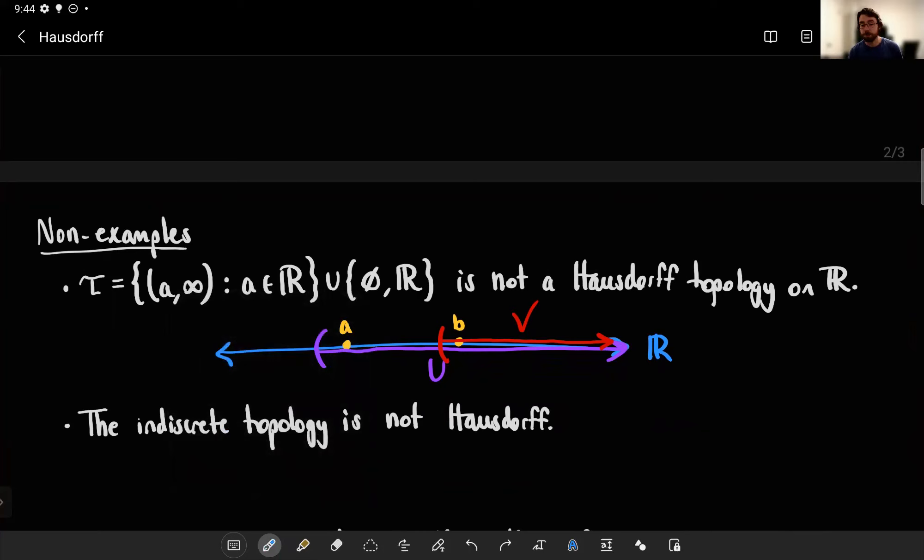Now, since we know the discrete topology is Hausdorff, maybe it's unsurprisingly indiscrete topology is not Hausdorff. Remember, the indiscrete topology is the topology where the only open sets are the ones that have to be open. The empty set and the whole space. And this is not Hausdorff because, well, if I pick, again, let's consider just some smattering of points. Let's say we're imbuing it with the indiscrete topology.